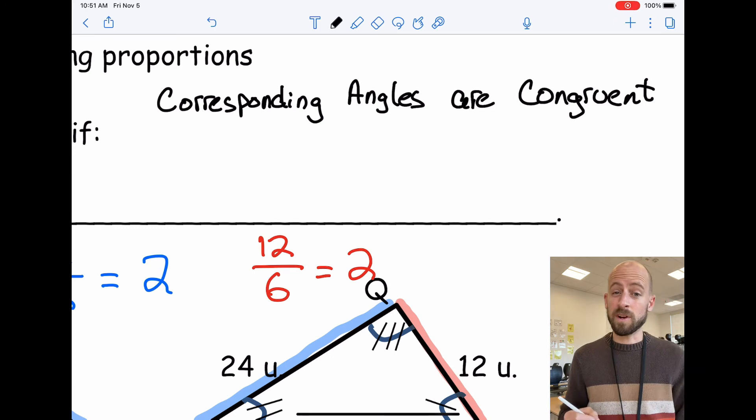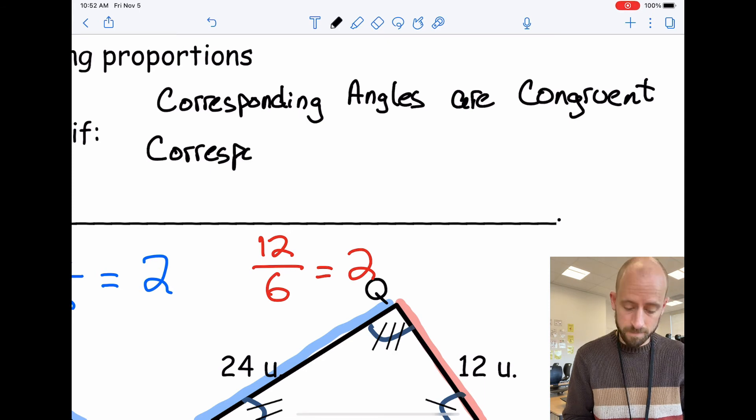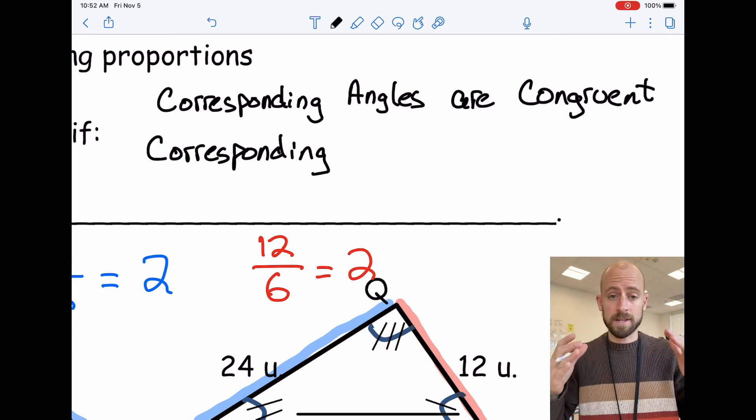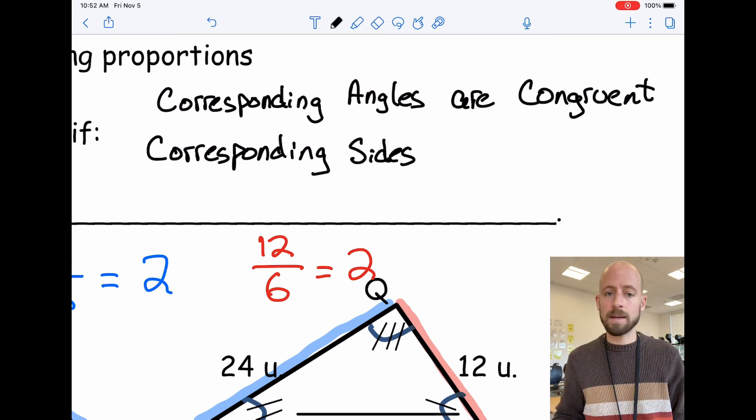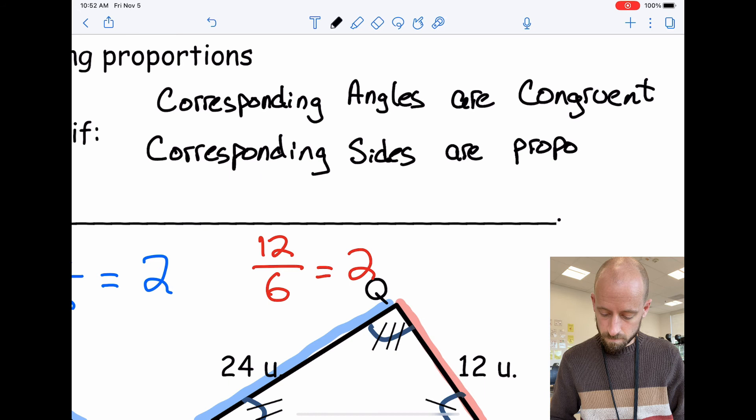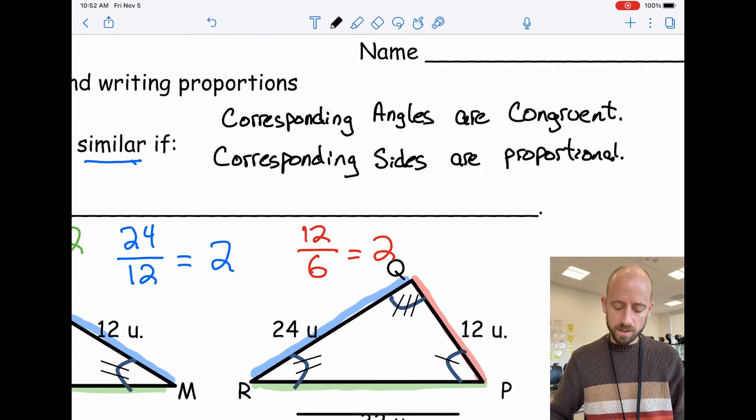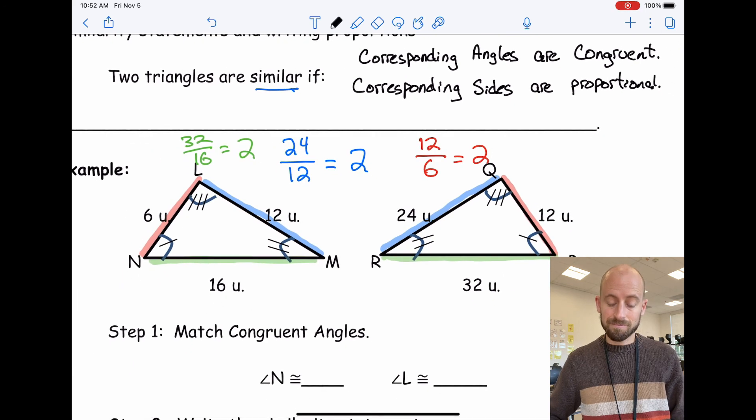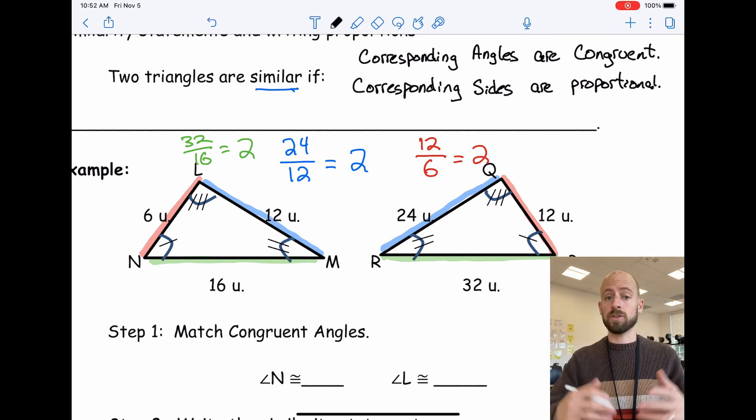This would be something you would write down in your notes, by the way. Also true, the corresponding matching. So when you see that word corresponding, you should be thinking, oh, I'm either matching the angles or I'm matching up the sides, like when I did the highlighting thing. So the corresponding sides, they're not congruent. They're not the same size. Corresponding sides are, we call it proportional. So both of those facts are true about similar triangles.